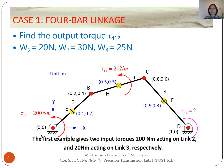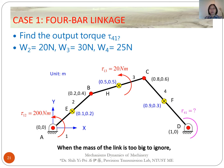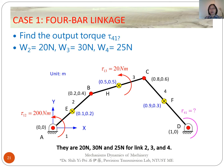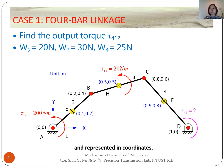The first example gives two inputs: a torque of 200 Nm acting on link 2 and 20 Nm acting on link 3. When the mass of the link is not to be ignored, its weight needs to be considered. There are 20 N, 30 N, and 25 N for links 2, 3, and 4. All positions of the joints and the centers of gravity of the links are known and represented in coordinates. The problem is to find the output torque Tau_41.